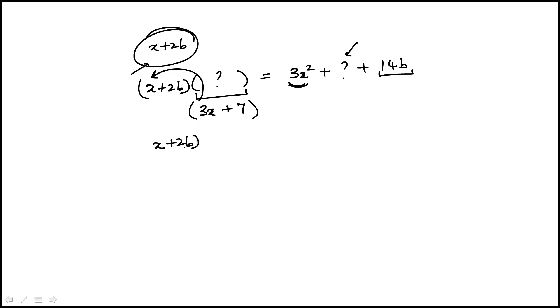So we'll multiply this out and see what we get. We get 3x squared plus 7x plus 6bx plus 14b. And of course, these match as they should.